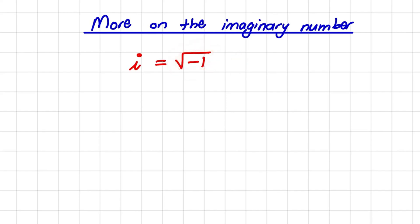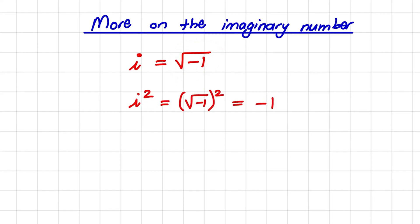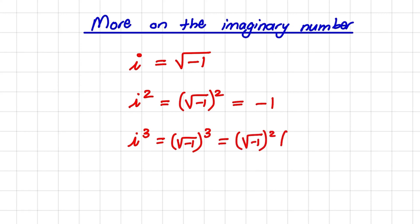Look what happens if I square i. i squared would be the square root of negative 1, squared, and that is simply equal to negative 1. Now if I take the cube of i, I have the square root of negative 1 cubed, which equals the square root of negative 1 squared, times the square root of negative 1, which gives negative 1 times i, or simply negative i.